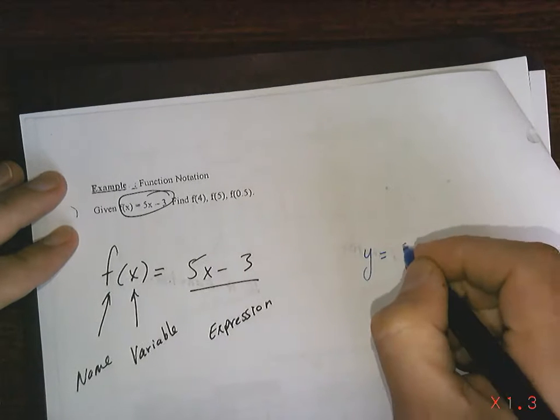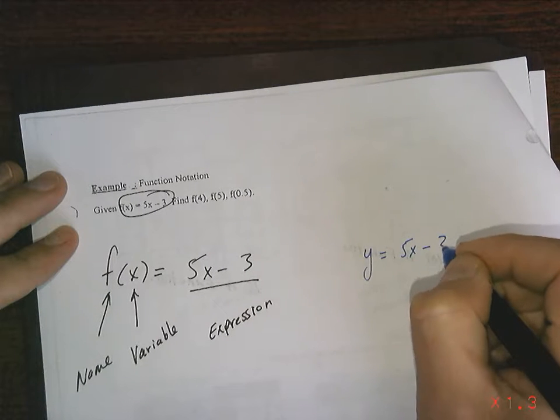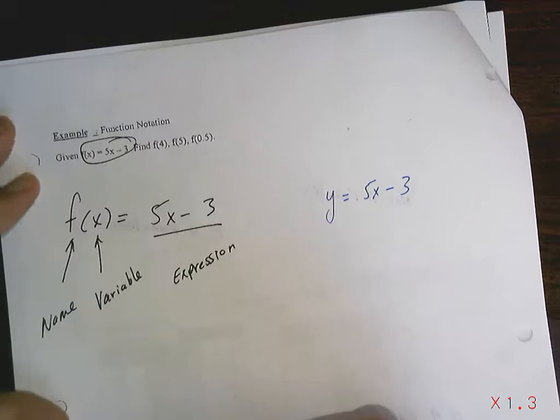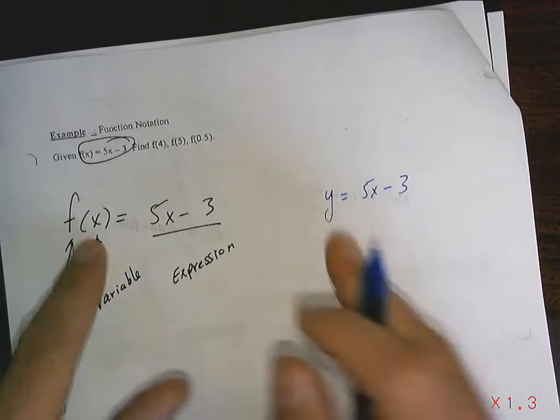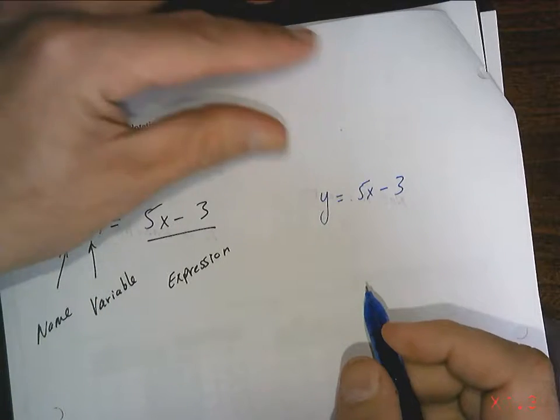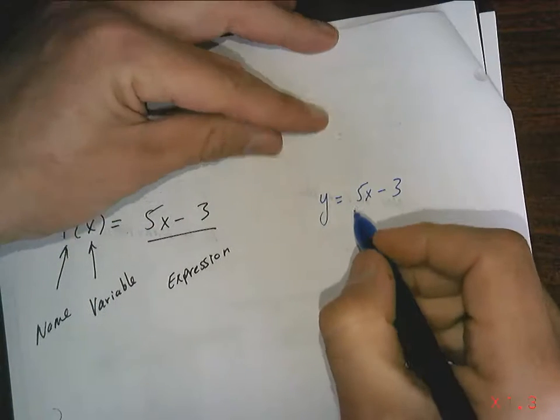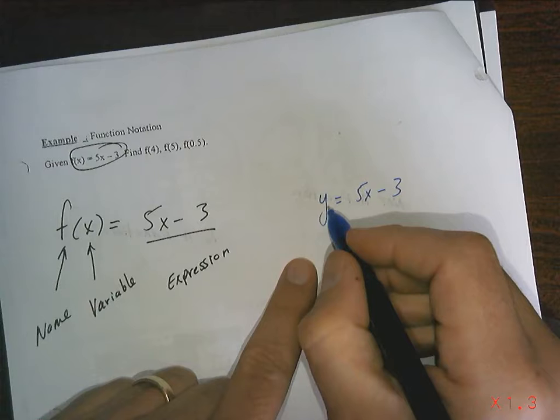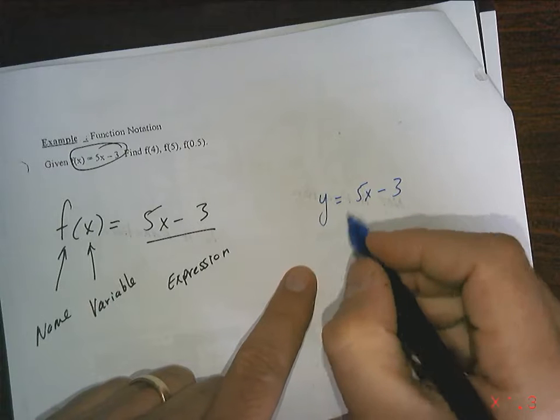Okay, there's no difference. Instead of calling it Y, we're calling it F of X. It does make life easier. In grade 9, if I wanted to know the value of Y when X equals 4, I would have to say determine the value of Y when X equals 4.